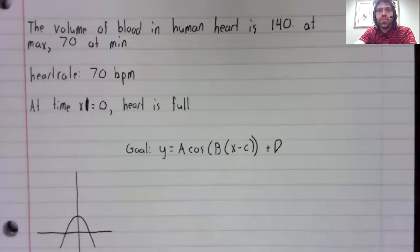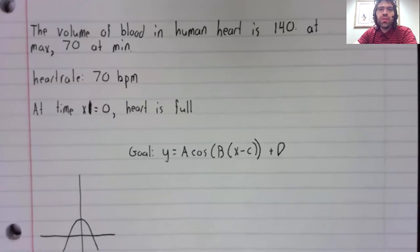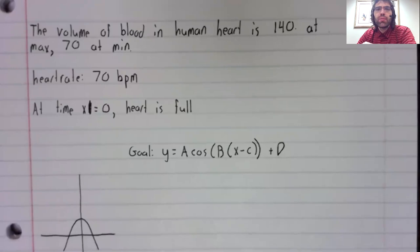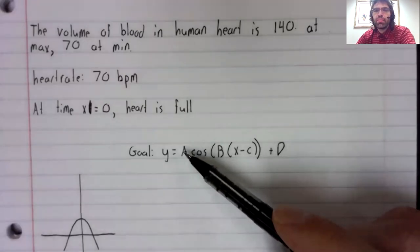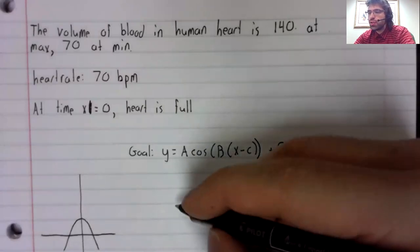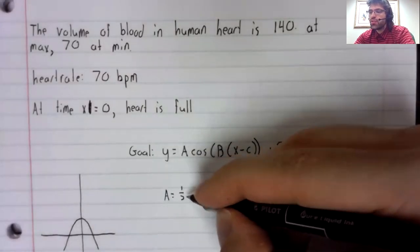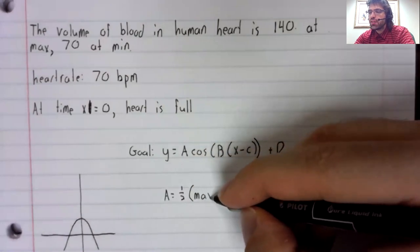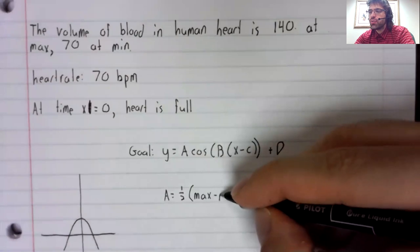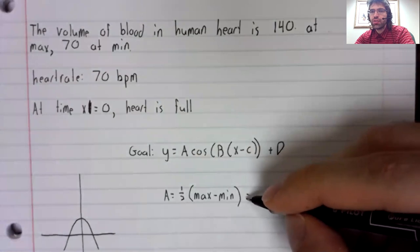And let's find A, B, C, and D, one by one. A is the amplitude. A is one half the maximum value minus the minimum value.